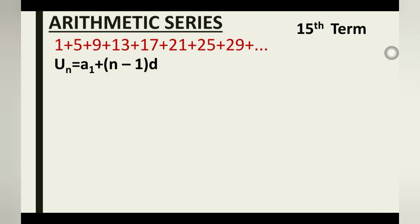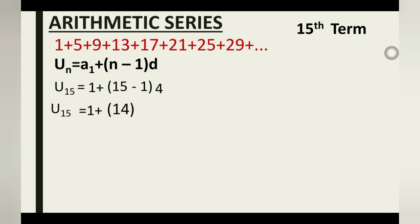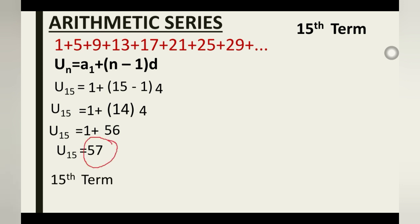Using the nth term formula to find the 15th term: a_15 = a_1 + (15 − 1) × d = 1 + (14 × 4) = 1 + 56 = 57. So the 15th term is 57.